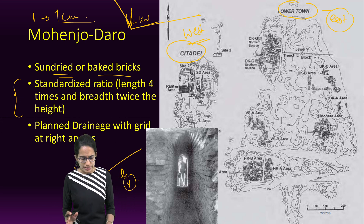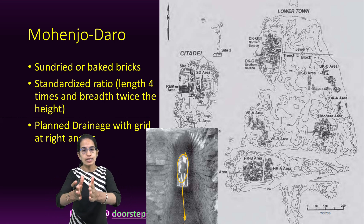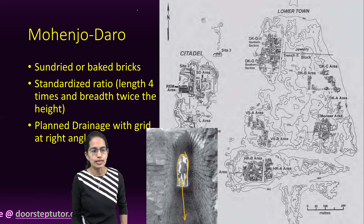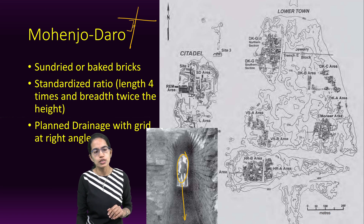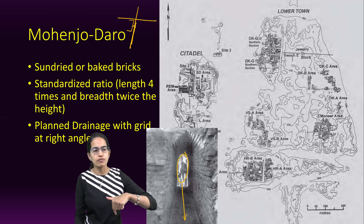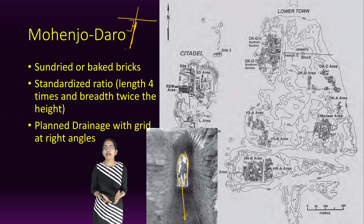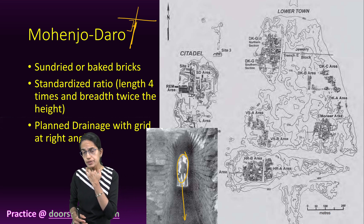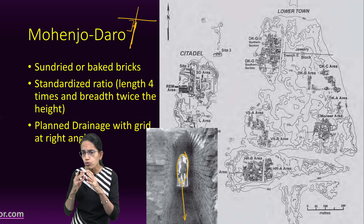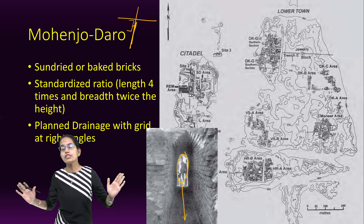The next interesting feature is the drainage system. There were planned drains made at right angles to one another. Every house would have an opening towards the street side, and the waste would go into the main drain, creating a well-demarcated drainage structure. Macaulay, when studying the Harappan civilization, found this to be one of the most amazing features of Mohanjodaro. All drains were made of brick, but sites that needed to be accessed for cleaning were made from loose bricks.